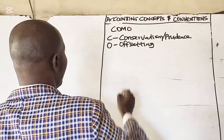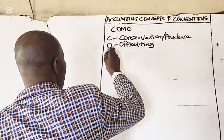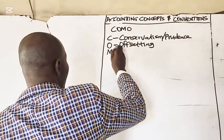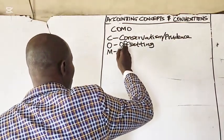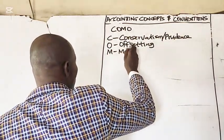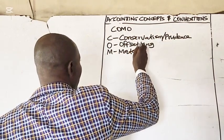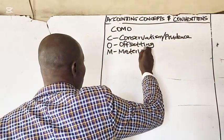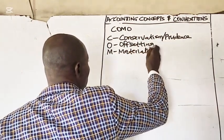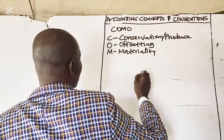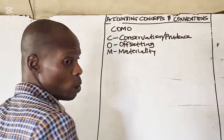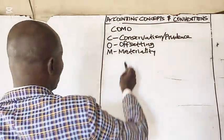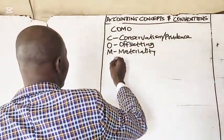M stands for materiality. O stands for objectivity — which here is the full disclosure convention.